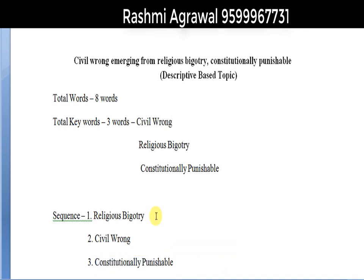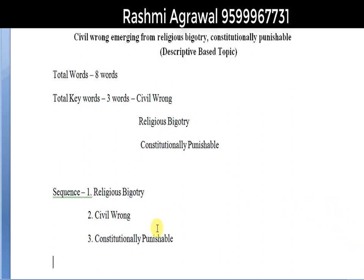So this is the sequence. In your essay, first you have to talk about religious bigotry, then proceed to civil wrong, and then talk about constitutionally punishable. If you analyze the interrelationship between the key components and write your essay sequence-wise, your essay will look organized, holistic, and interconnected — line by line and para by para. Now we are going to prepare the roadmap of the essay. You should devote at least 20 minutes to one essay, and at least 10 minutes of that to preparing the roadmap.